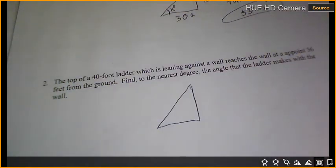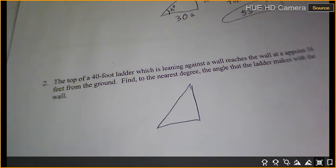What side is the 40 foot ladder? What side? I'm just asking you right now. Try to do it on your own. It says leans against a wall and reaches the wall at 36 feet from the ground. Then it's asking the nearest degree the angle the ladder makes with the wall. Spend a second. Draw that out.